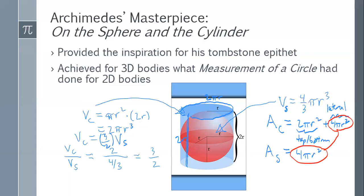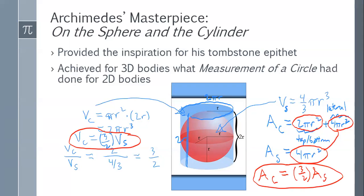But the cylinder has that additional 2πr² from the two caps, which is 50% more. So the total surface area of the cylinder is 50% larger than the surface area of the sphere — which is exactly what happened for volume. Once again we see that the surface area of the cylinder equals three-halves the surface area of the sphere.